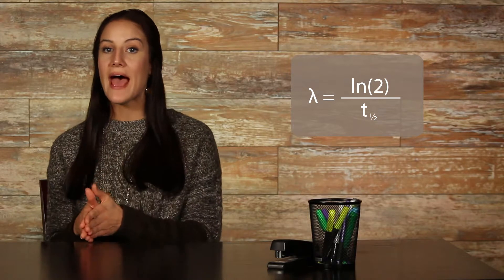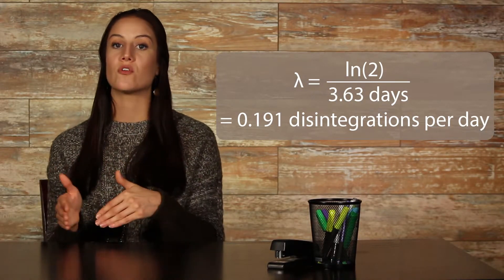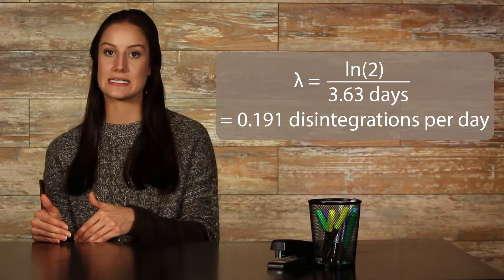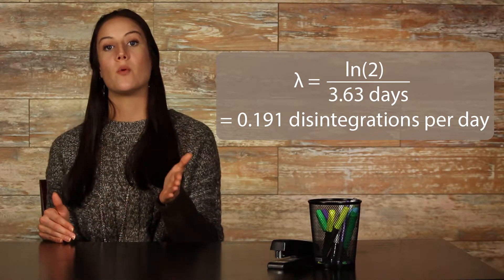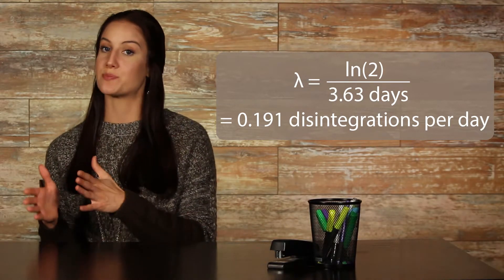For example, suppose a sample of radium-224 starts at a mass of 10 grams. Its half-life is 3.63 days. The remaining mass of radium-224 after 8 days can be calculated by lambda equals ln2 over 3.63 days equals 0.191 disintegrations per day.